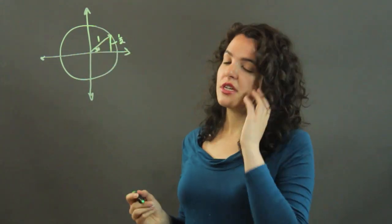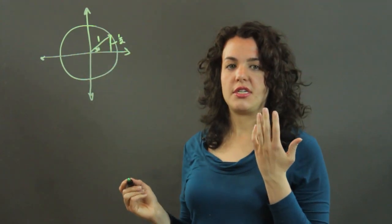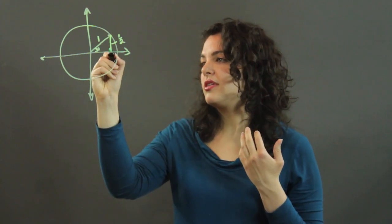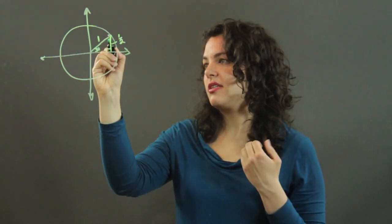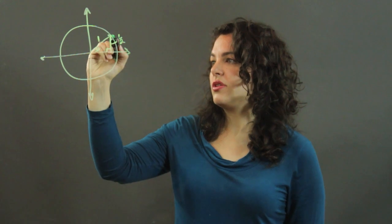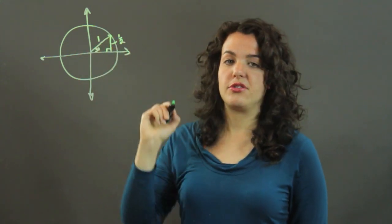I know this because I just use my knowledge of a 30, 60, 90 triangle. This is 90 degrees, that's 30. This is 60. This is the smallest angle, so it's half of the hypotenuse.